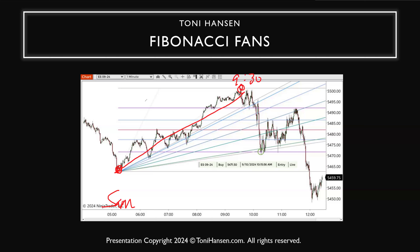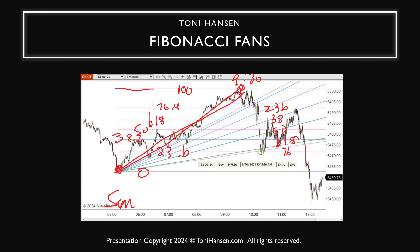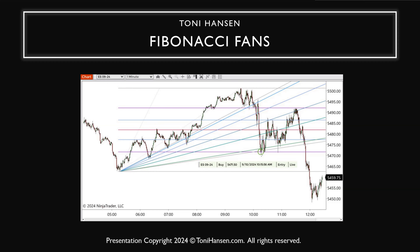I've got two types of fibonacci on here: fibonacci retracement levels as horizontal lines and a fibonacci fan. The retracement levels, starting from zero, are your 23.6, 38.2, 50, 61.8, and 76.4. This morning as the market was coming down, we saw a pretty strong drop into that 76.4 purple fibonacci retracement level.